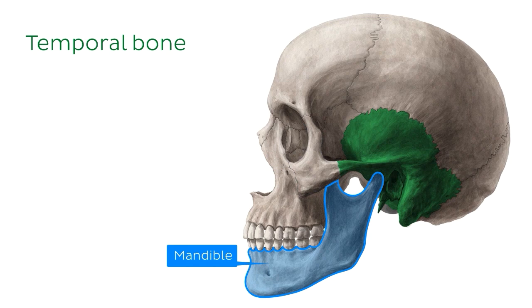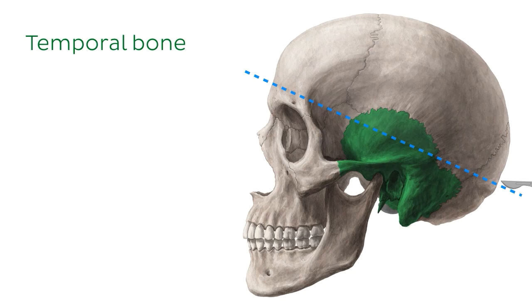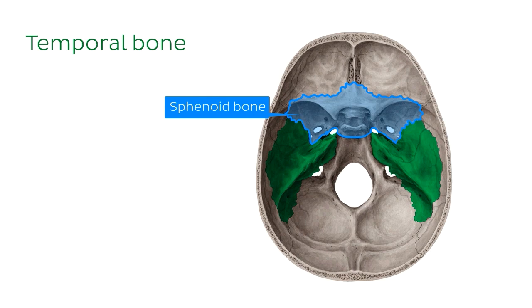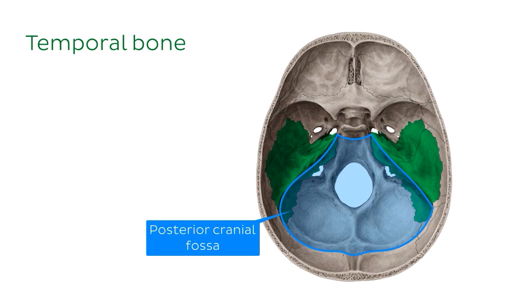If we have a look at an interior view of the skull, we can also see that it articulates with the sphenoid bone. The cranium can be divided into an anterior cranial fossa, a middle cranial fossa and a posterior cranial fossa. As you can see, the temporal bone is part of the middle cranial fossa.